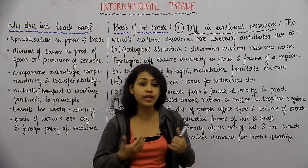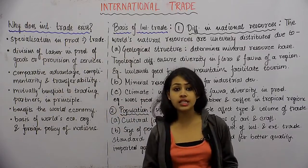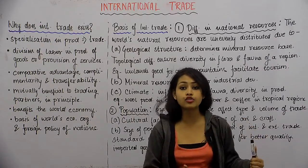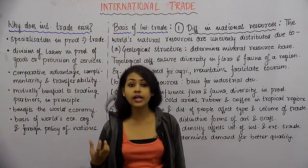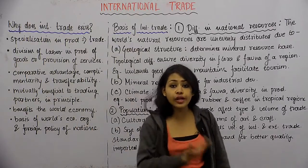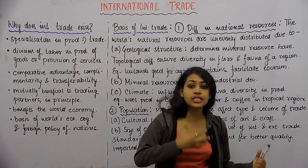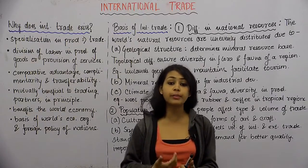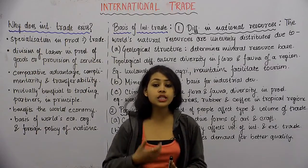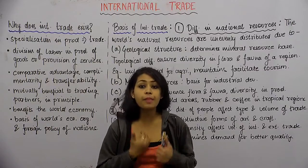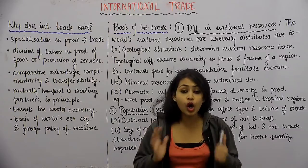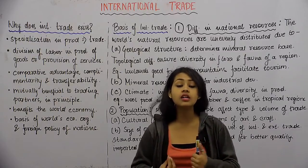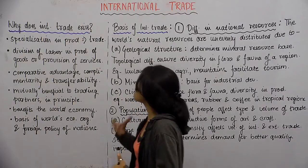Every region is doing what it does best - that's called specialization. When this region A is producing very large amounts of agricultural goods and region B is very good at manufacturing, and when they are trading amongst themselves, that's when we say specialization has led to trade. Specialization is the basis for international trade because countries are producing in bulk amounts what they are best at, and that is why these commodities get traded internationally.